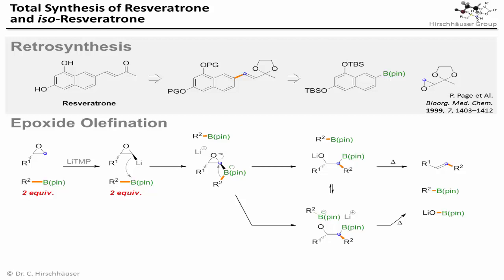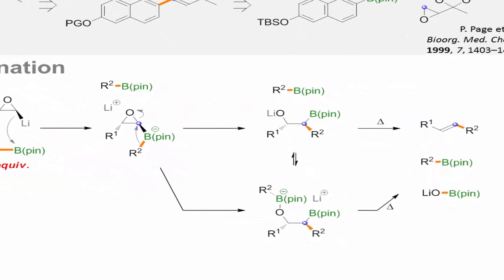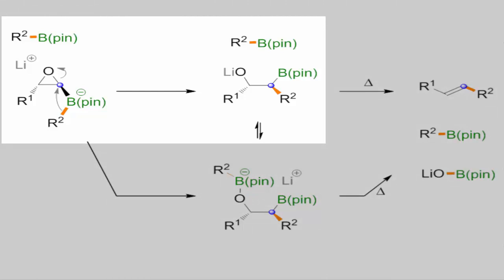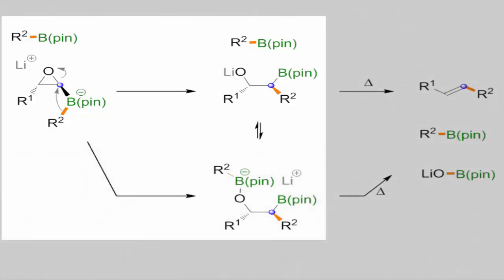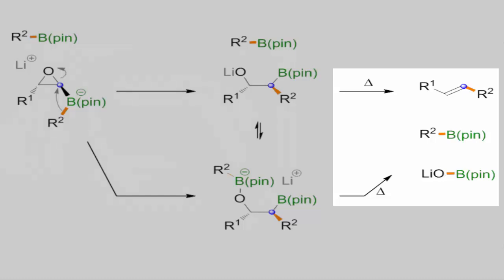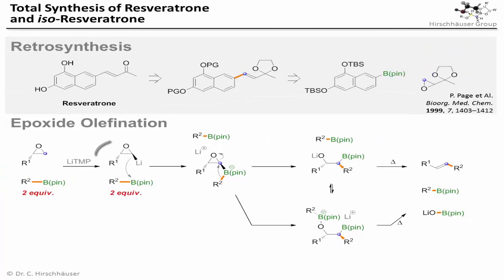However, there is a problem. In order to get good yields out of this reaction, two equivalents of the boronate precursor are usually necessary. The reason for this might very well be that the alkoxide that results from the 1,2 rearrangement reacts with another equivalent of the boronic ester. That means, if the 1,2 rearrangement — which could also be catalyzed by excess boronate — is as fast or even faster than the ate-complex formation, one molecule of lithiated epoxide will take two molecules of boronic ester out of the equation. The second equivalent of boronic ester is re-liberated after the elimination, but for alkyl-substituted alkenes that requires heating. And since a lithiated epoxide is a classic carbenoid, it will certainly not survive such harsh treatment.